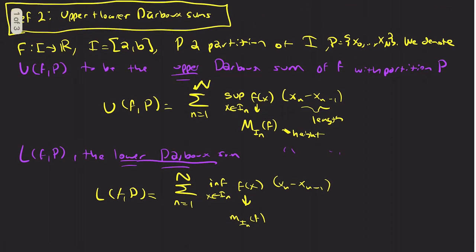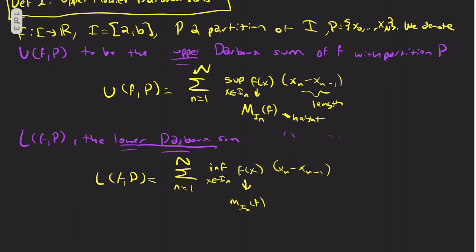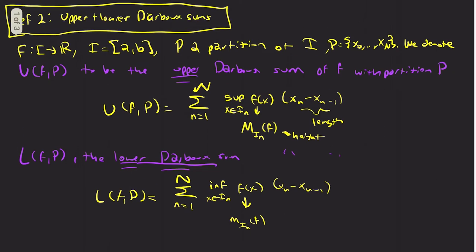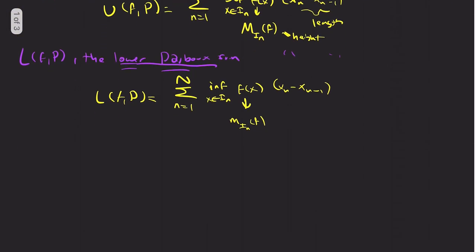All that we're doing — so Riemann sums, if you recall from calculus, there's tons that you can do: midpoint rule, you can do the upper limit, the lower limit, you can pick really any function value that you want. The Darboux sum is a specific rule that says we're just going to take the biggest value and the smallest value, because it's really easy to work with that way.